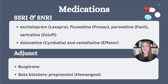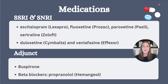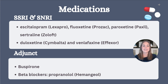You will also more than likely see beta blockers being used off-label for occasional anxiety. Beta blockers are really only useful for performance-based anxiety, specifically if the patient experiences physiological symptoms of anxiety like tachycardia or tremors. Low-dose propranolol or Hemangeol can be used 30 minutes before the anxiety-provoking event.